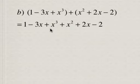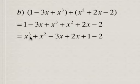So now we're going to collect like terms. x cubed, there are no other like terms for x cubed. x squared, there's only one x squared term. There are two x terms, so negative 3x and plus 2x, 1 and minus 2.